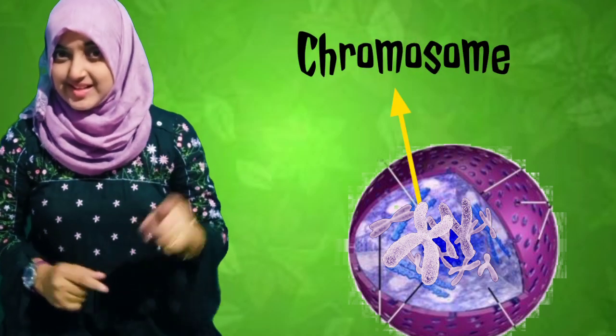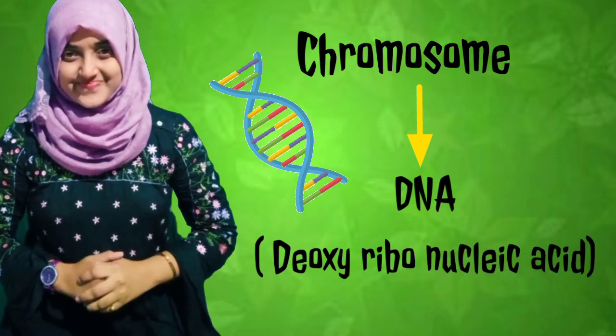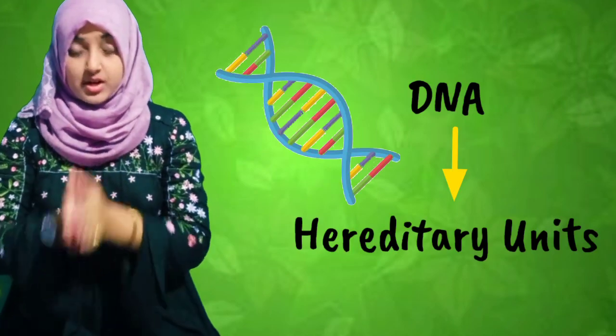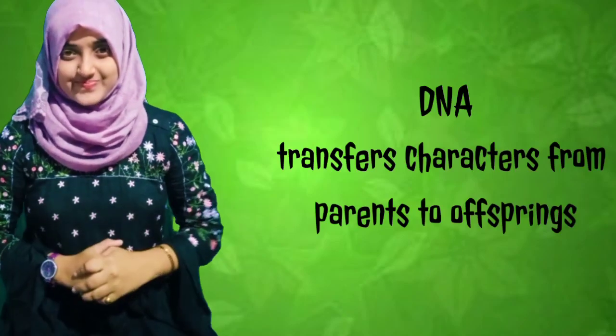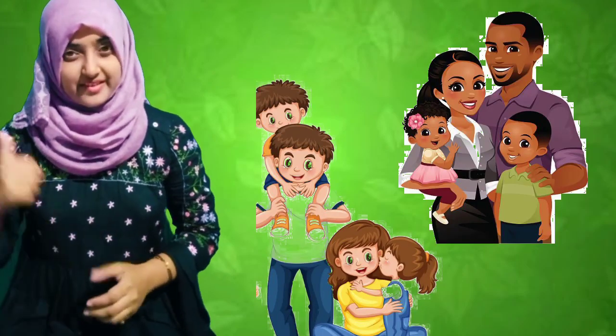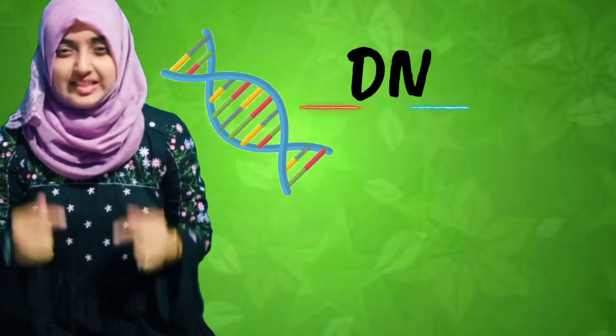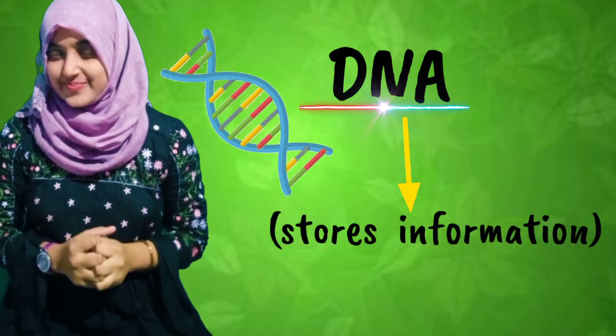In addition to this, the nucleus has an exclusive genetic material called chromosomes, which in turn has the DNA — deoxyribonucleic acid. These DNA are nothing but the hereditary units which transfer the characters from parents to offspring. Have you ever wondered why you look similar to your parents? That magic happens because of this exclusive DNA, which stores all information regarding our appearance and transfers a part of it from parents to offspring.